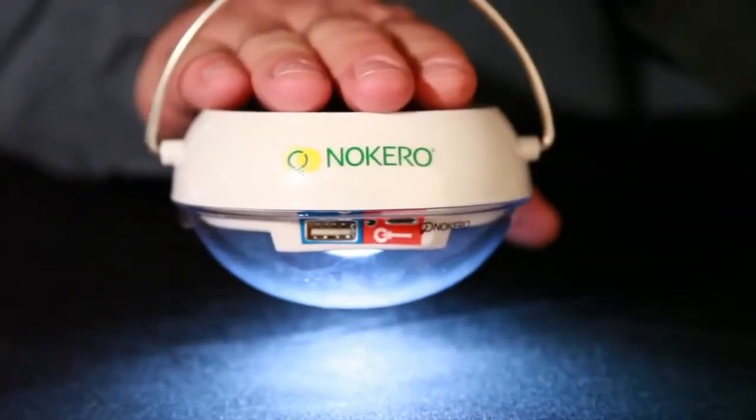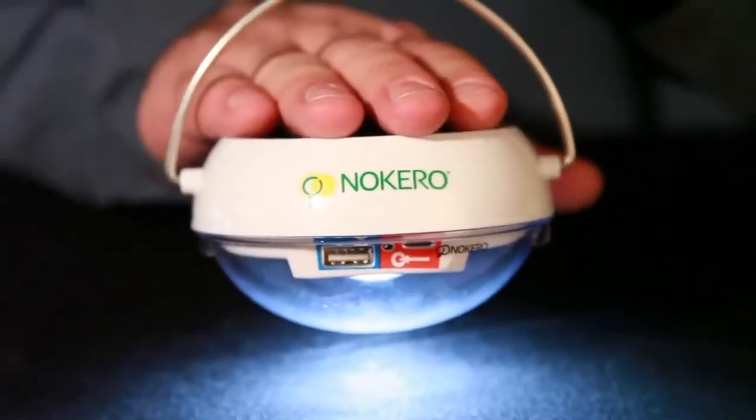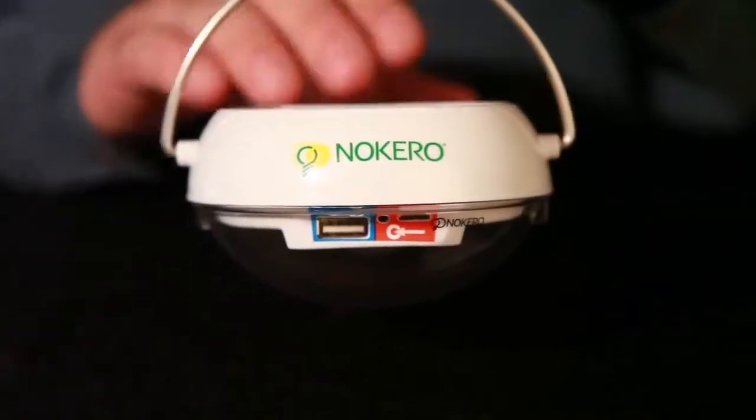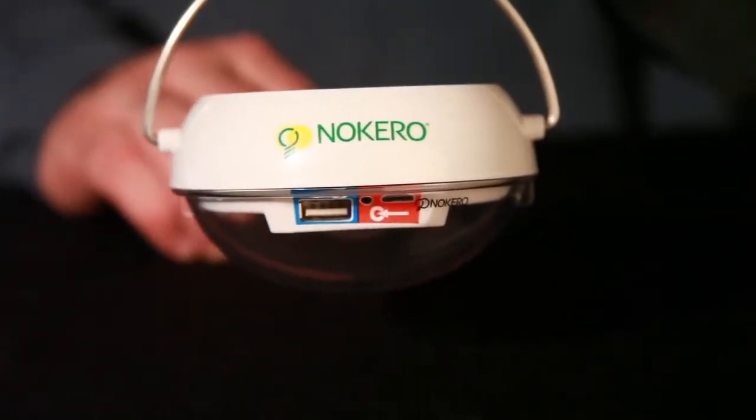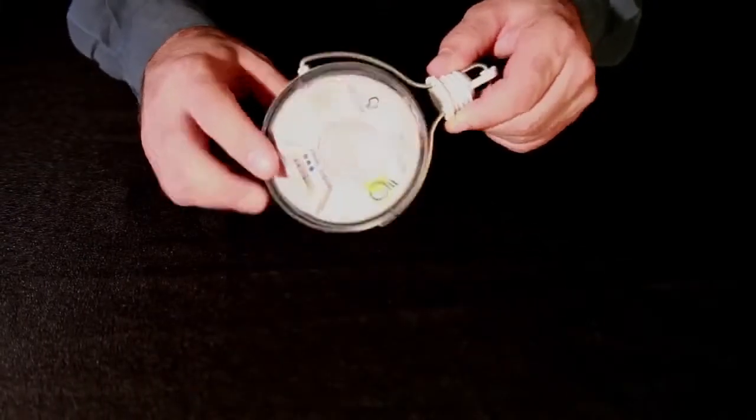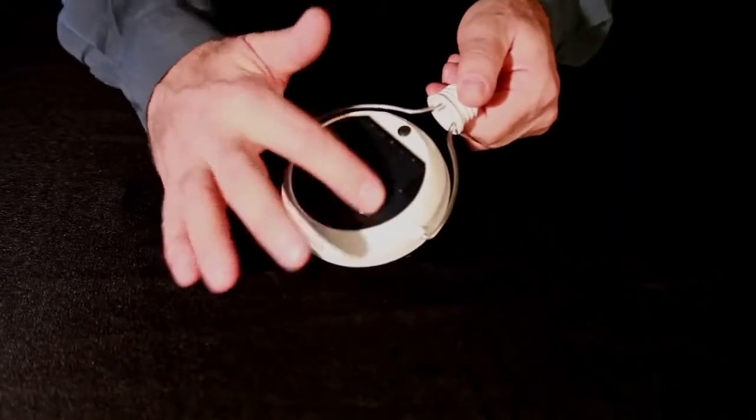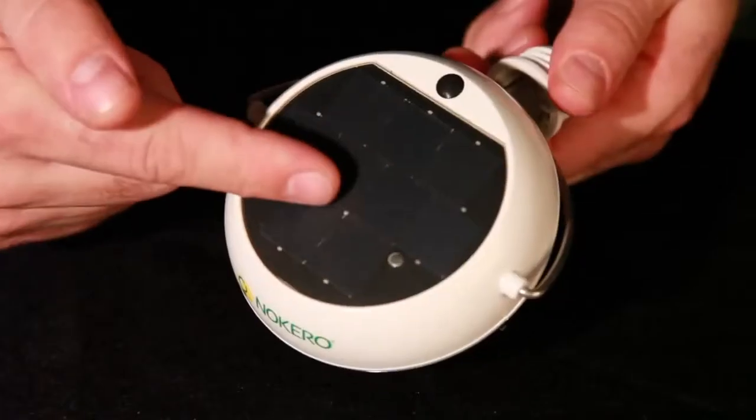The Nocaro N222 has the latest technology to enable a bright light in an affordable and portable package. The N222 has a powerful solar panel that charges a lithium iron phosphate battery inside the housing.